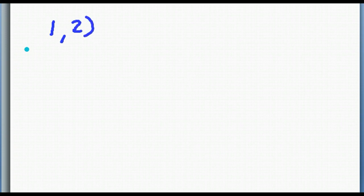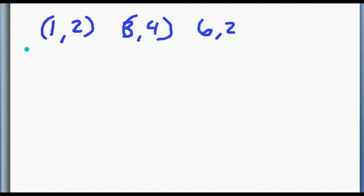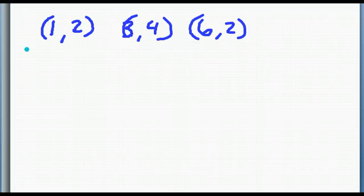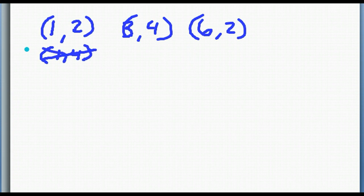If we take the ordered pairs (1,2), (3,4), (6,2), that's a relation. It's also a function because all of the x's go to one y: 1 goes to 2, 3 goes to 4, 6 goes to 2, which is okay. If we had 1 going to 2 and 1 also going to 4, that would not be a function because the 1 has two different homes that it could go to.